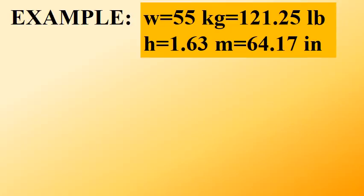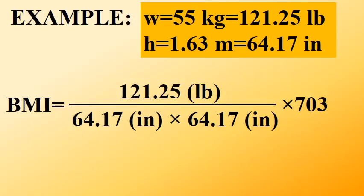If we convert kilograms to pounds and meters to inches, the same person's weight will be 121.25 pounds and the height 64.17 inches. The body mass index will be 121.25 divided by the square of 64.17, and everything will be multiplied by 703.